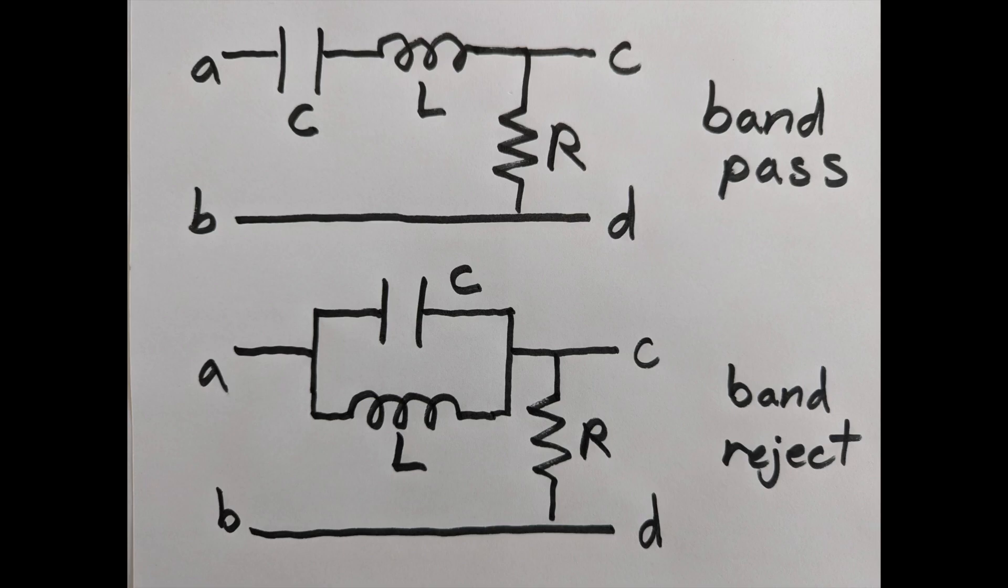For the upper circuit, extremes have a gap, so no voltage gets through and you have no signal. At intermediate frequencies, that's when you can get a little bit of signal through, and that's why this is a band-pass filter. In the opposite situation, it's called a band-reject filter.